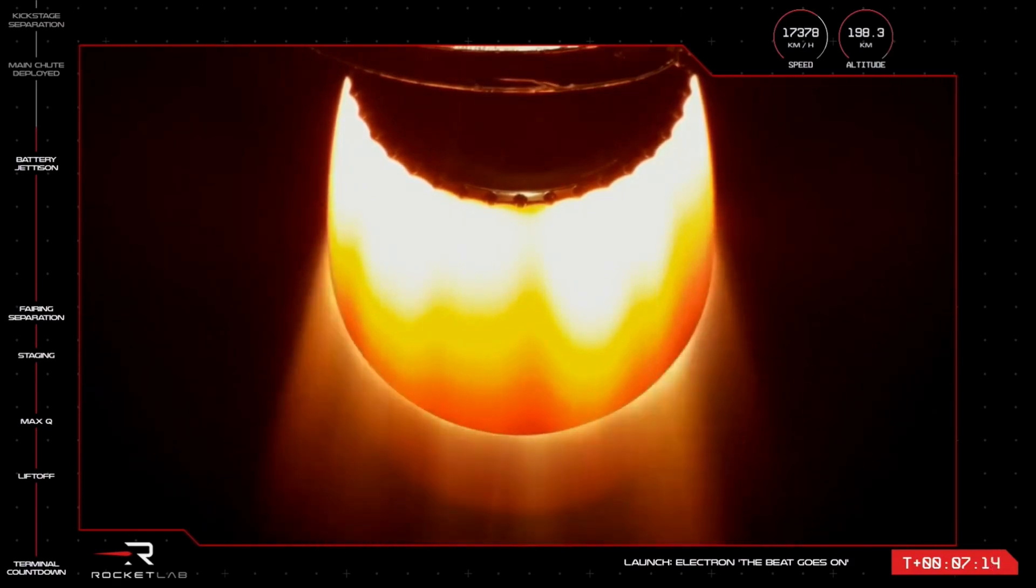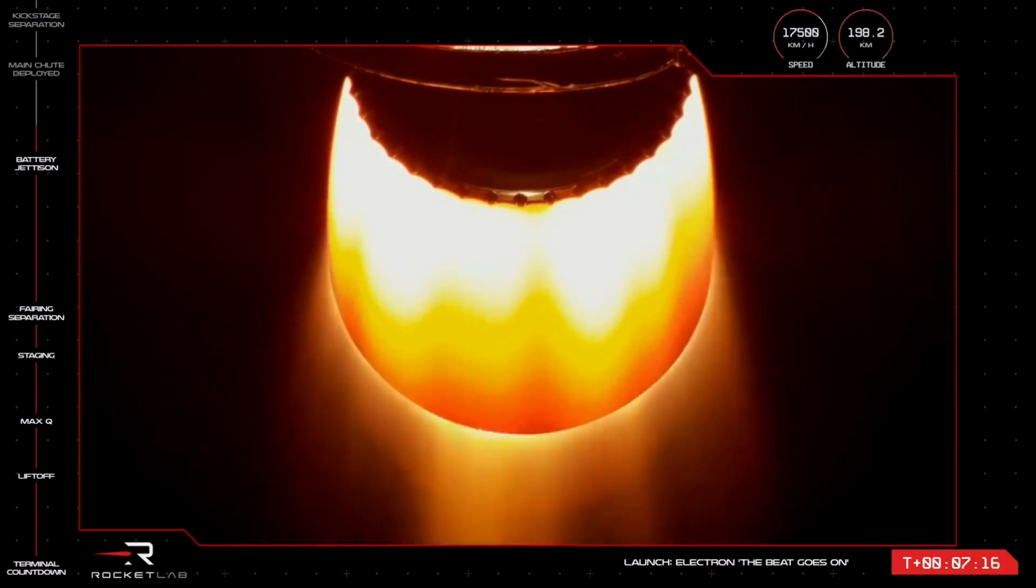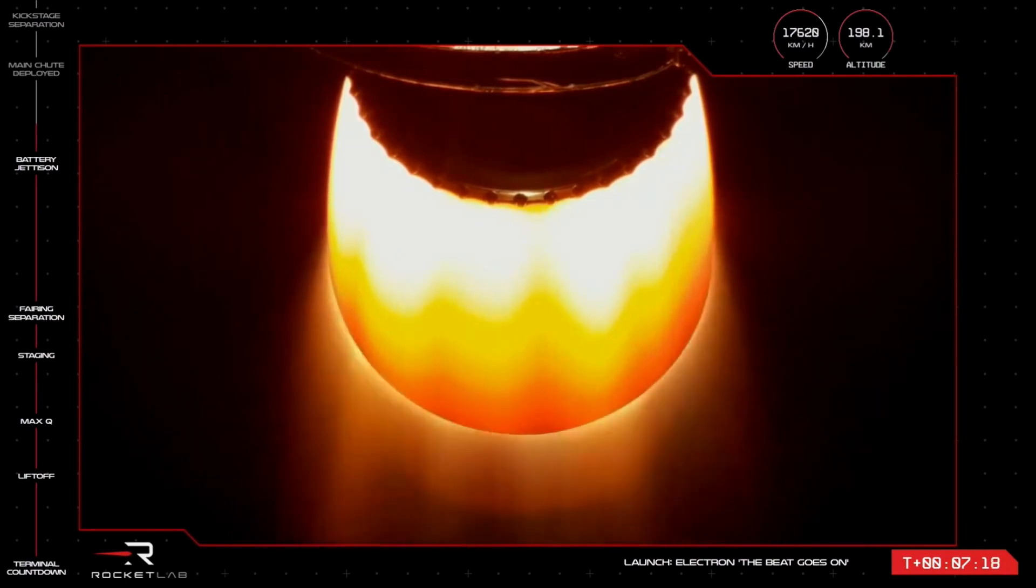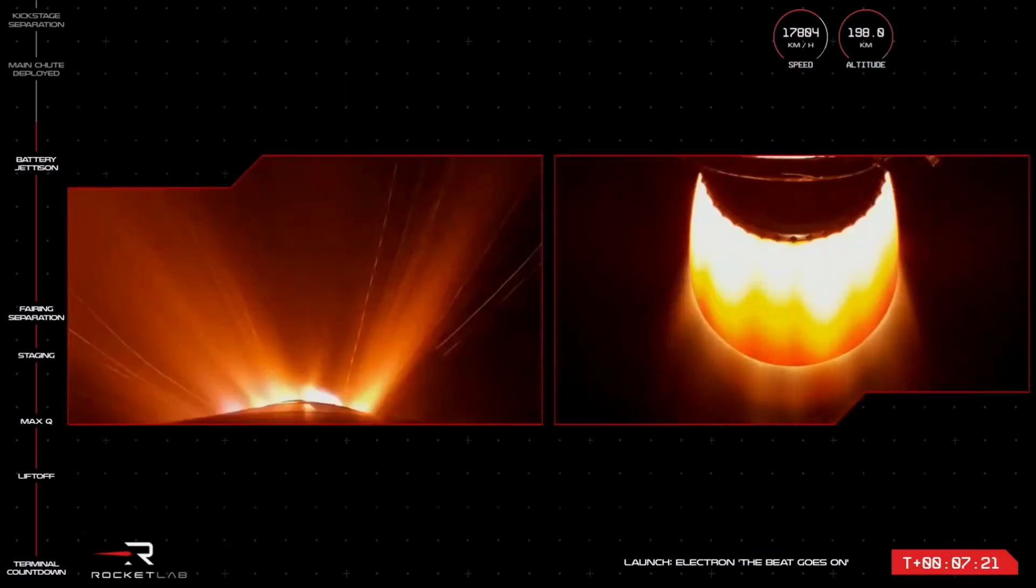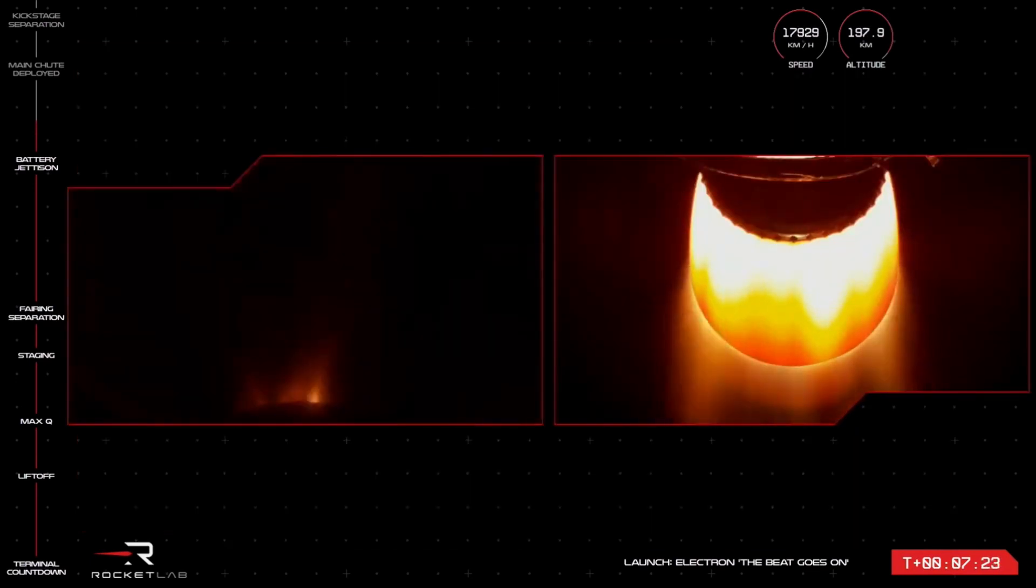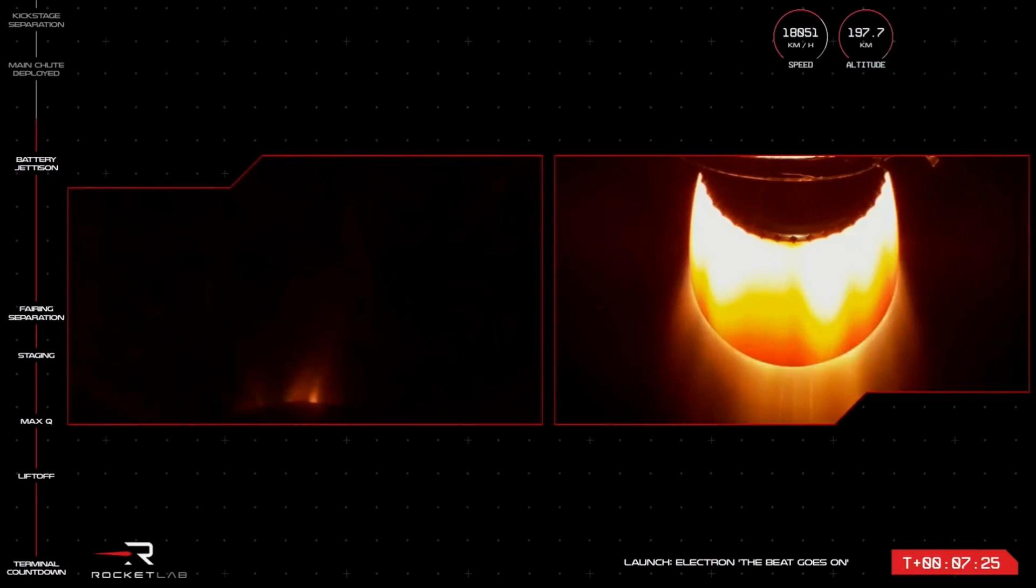Electron Stage 2 continues on its way to orbit at an altitude of 198 kilometres and a velocity of 117,000 kilometres per hour.